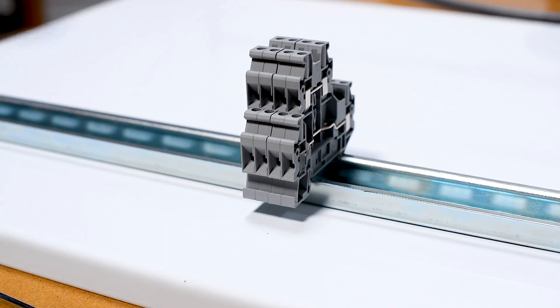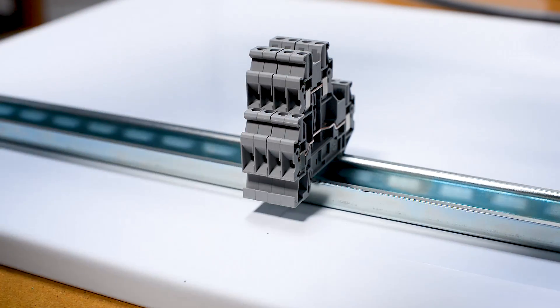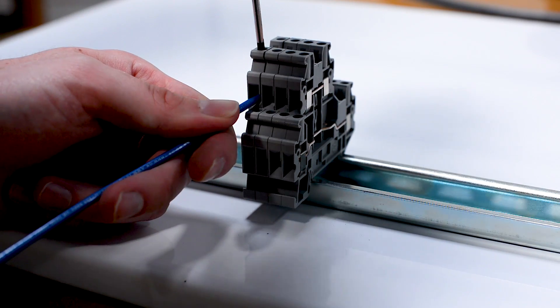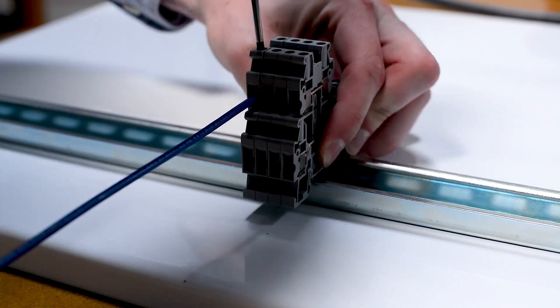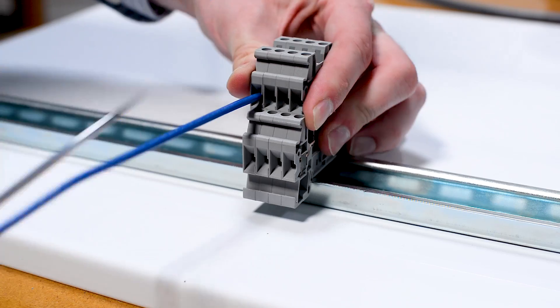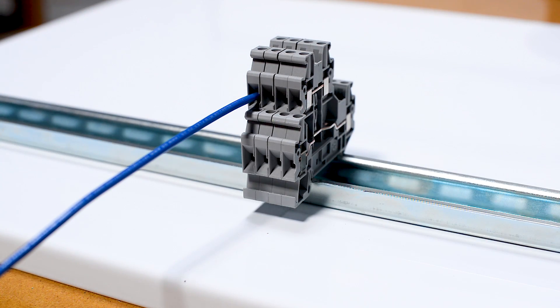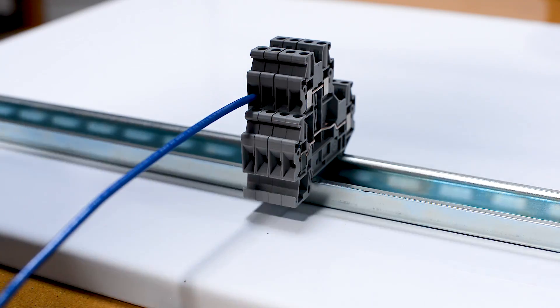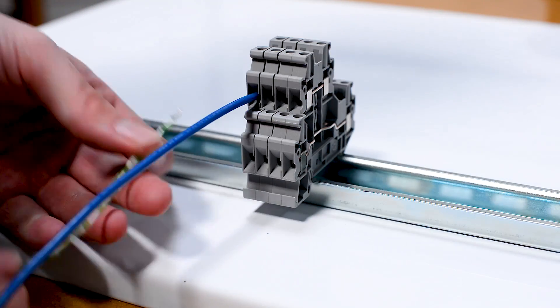It also protects the PLC from possible surges or over current events so that the PLC doesn't see that spike and it protects that hardware as well. So it's a really good idea to have fuse protection or some kind of disconnect, but the fuse protection is the preferred method to offer optimal protection.